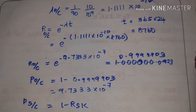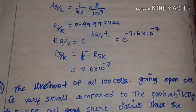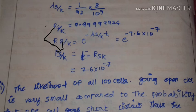The probability of open circuit is 1 minus R open circuit, which equals 9.733 into 10 to the power minus 7. For short circuit, lambda s equals 8 per 10 to the power 9 hours, giving lambda s equal to 1 over 92 — that is 92 into 8 divided by 10 to the power 9 hours. Solving: R short circuit equals e to the power minus 7.6 into 10 to the power minus 7, giving R sk equals 0.99999924. The probability of short circuit equals 1 minus R sk, that is 7.6 into 10 to the power minus 7.